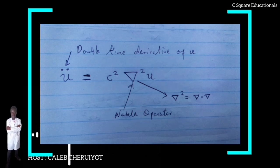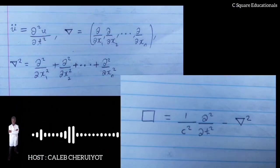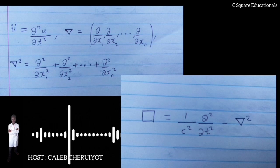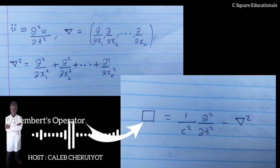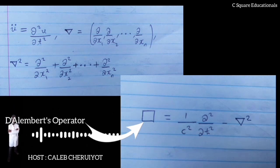In even more compact notation, sometimes used in physics, as shown, where all operators are combined into the d'Alembertian operator, not the box you see there. Box u equals zero, so that box denotes all operators that are combined into the d'Alembertian operator.